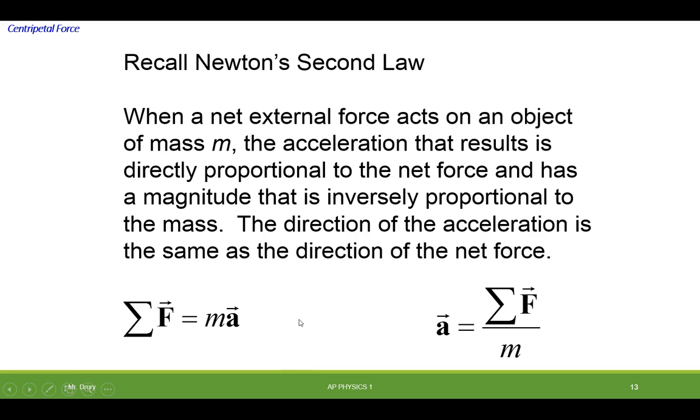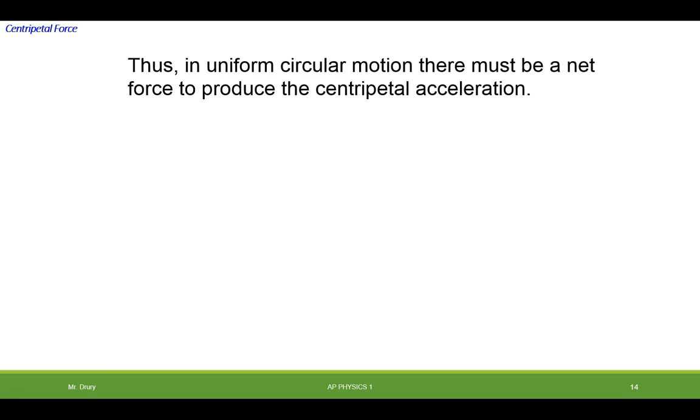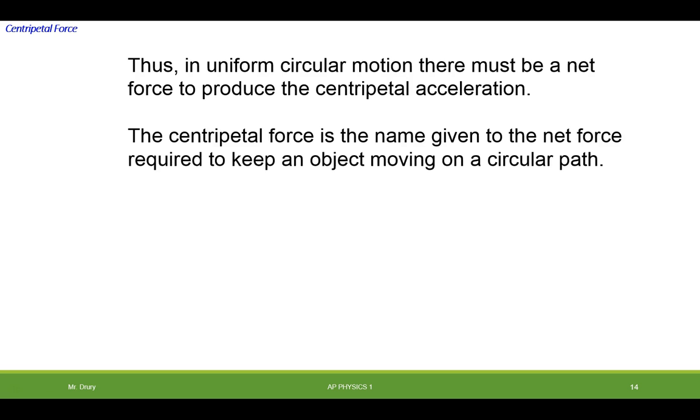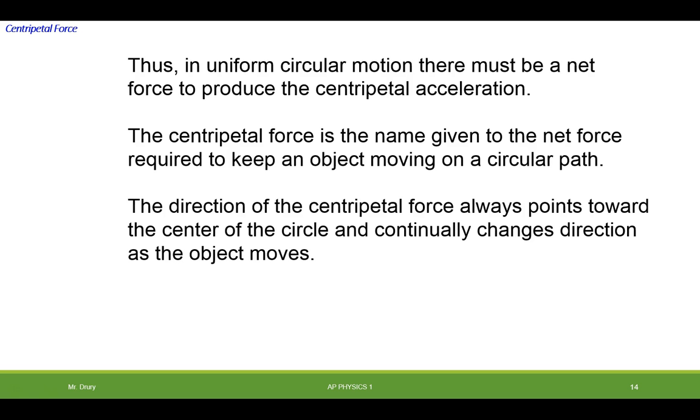Now, let's see how that applies with centripetal force and centripetal acceleration. In the uniform circular motion, there must be a net force that produces that centripetal acceleration. And that centripetal force is the name given to the net force required to keep an object moving in a circular path. The direction of the centripetal force always points towards the center of the circle, and the reason it does is because the acceleration points towards the center of the circle.